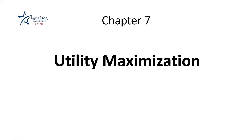Hi, everyone. Let's talk about Chapter 7, which is about utility and utility maximization. This is the only chapter we're going to talk about consumers. After this chapter, we're focused on businesses and the production side of the economy. Utility in general means satisfaction or the pleasure that somebody can get from consuming something, buying something, eating something. So utility is nothing but satisfaction. And in this chapter, we're going to see basically how consumers and buyers can maximize the satisfaction from their consumption.